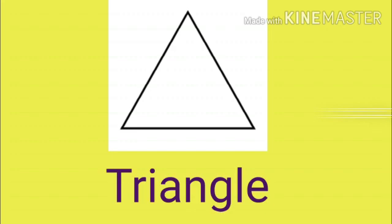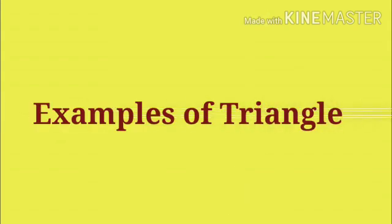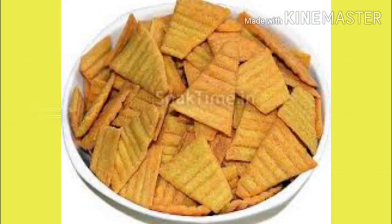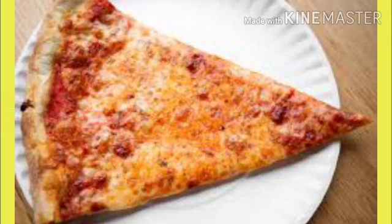Now, our next shape is triangle. Examples of triangles are sandwich, bingo chips, and one more. You like this? Very much. Yes, piece of pizza.